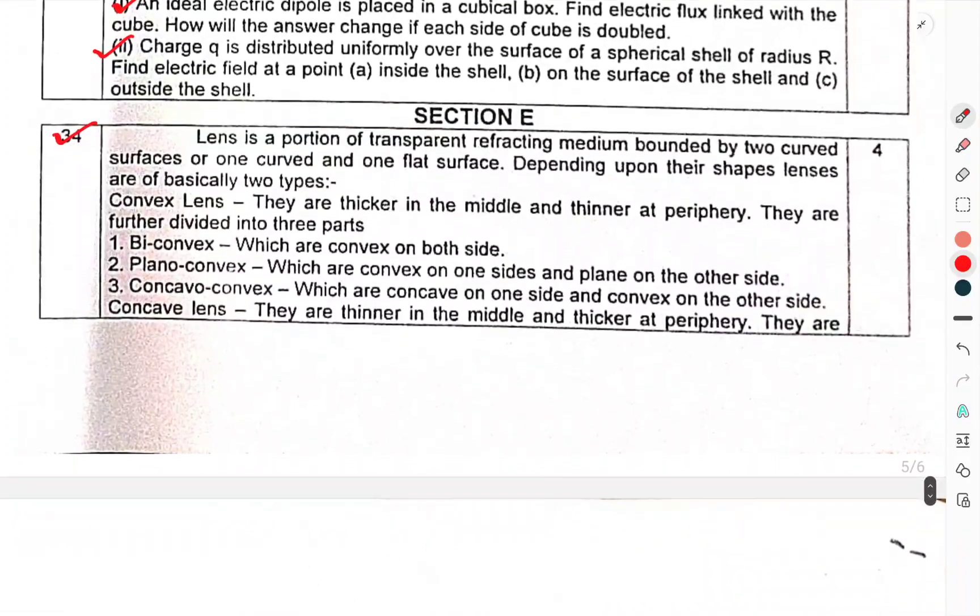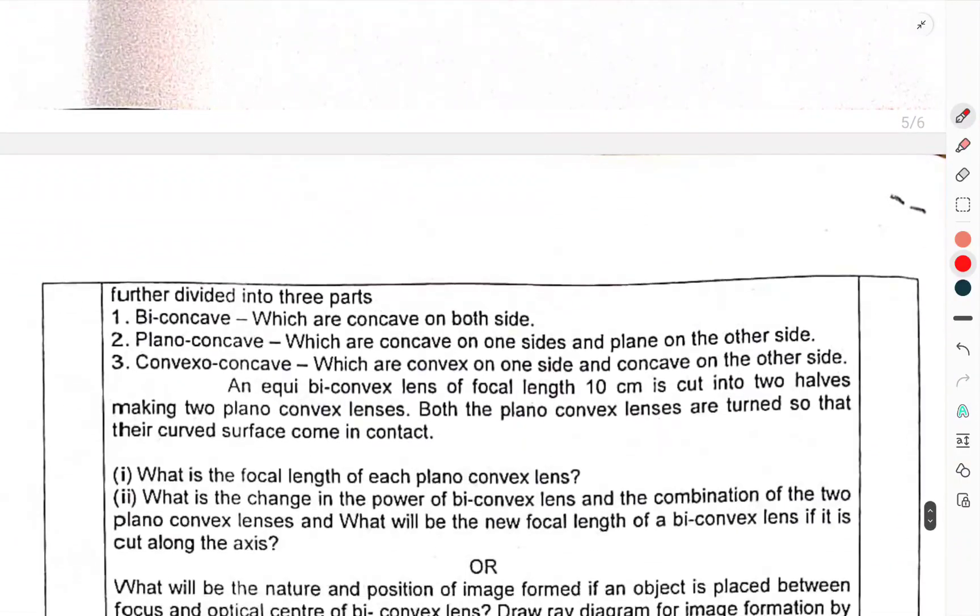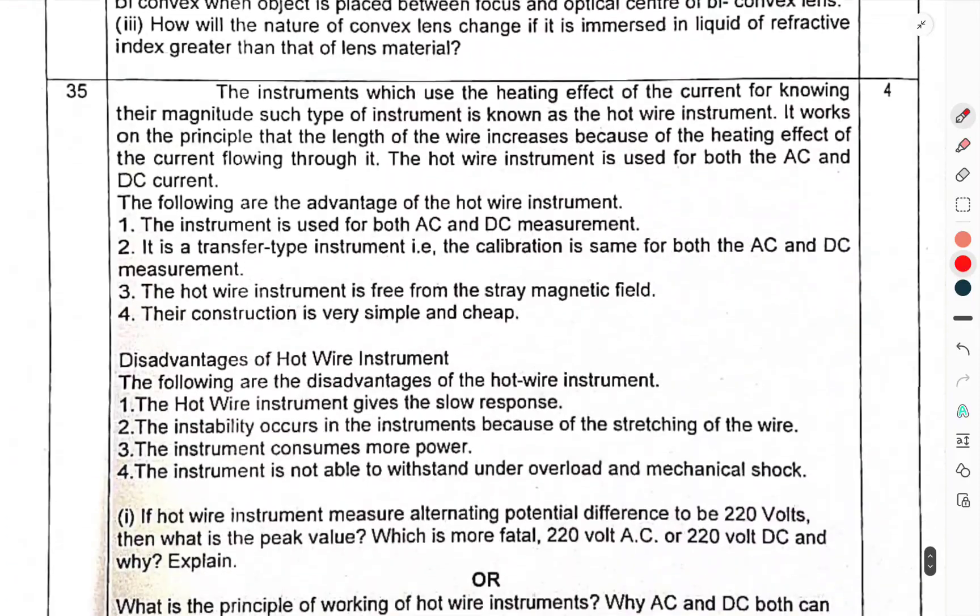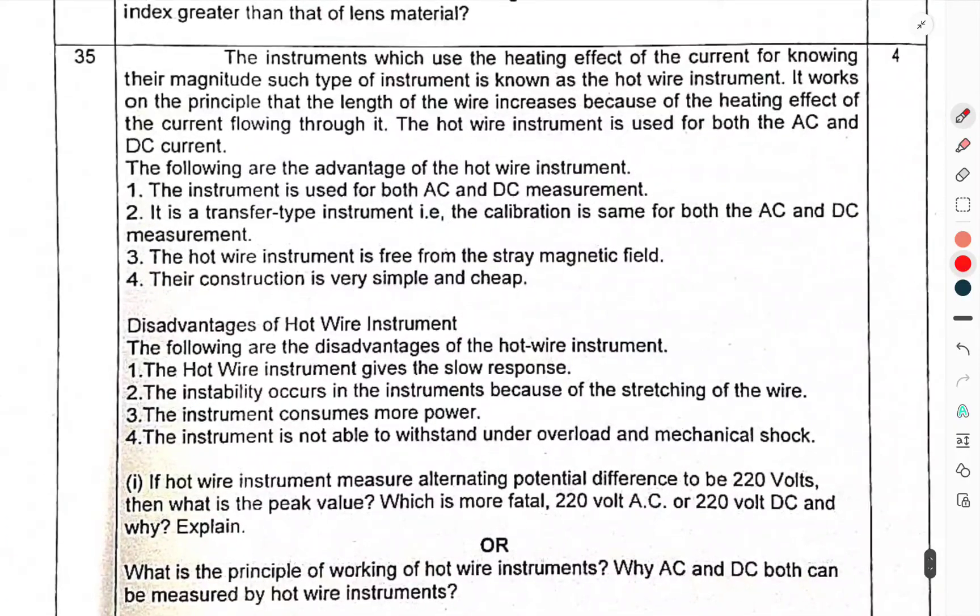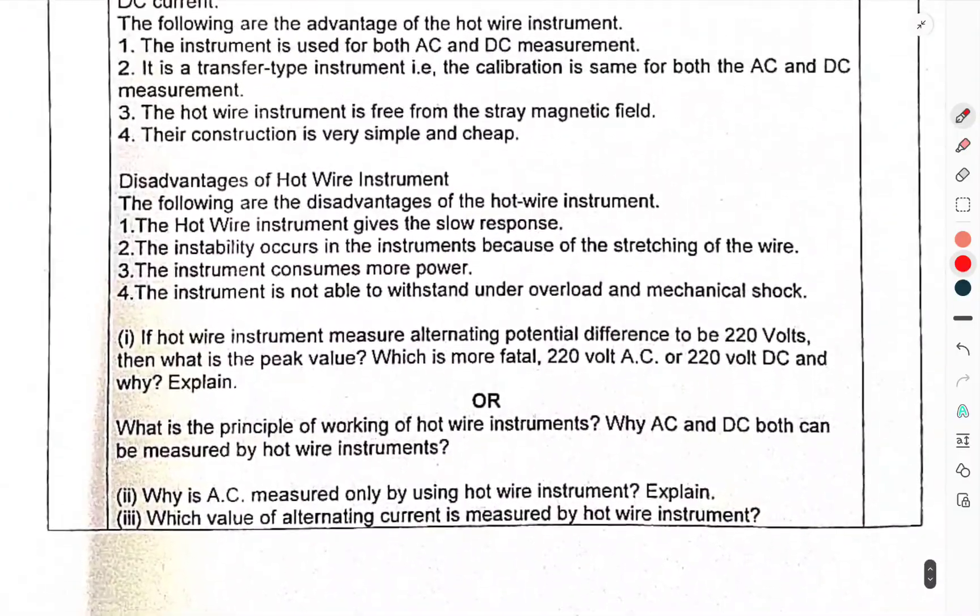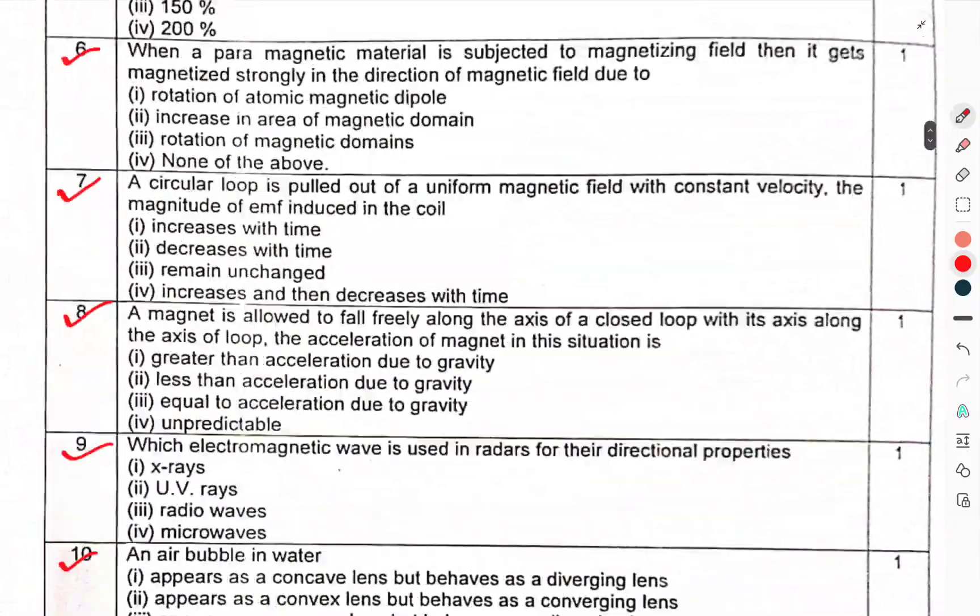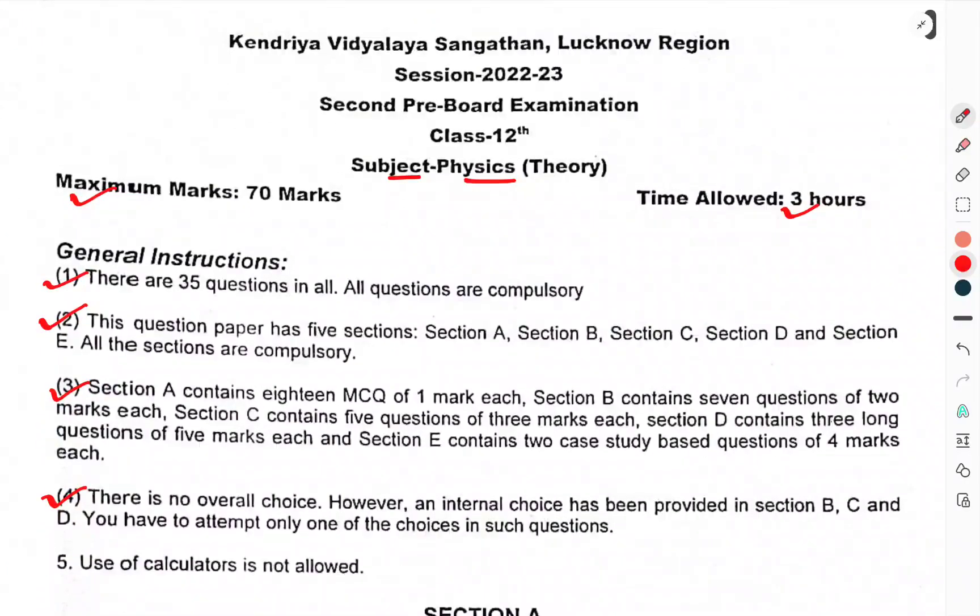This is a case study question. Question number 34, you will read yourself. I'm not reading this. Question number 34, you have to read yourself. Then 35 also you have to read yourself. This is also a case study based question. Okay, you have to read both these questions yourself. This was the question paper of class 12th, subject physics, second pre-board. That's enough for this one. Thank you.